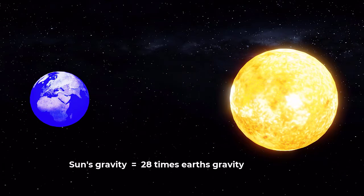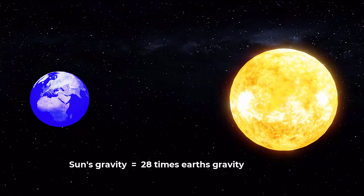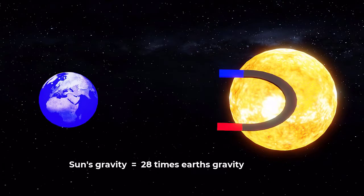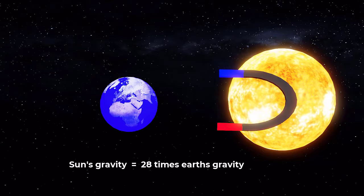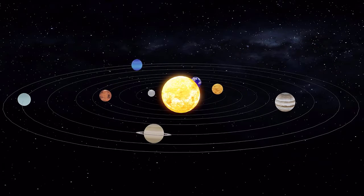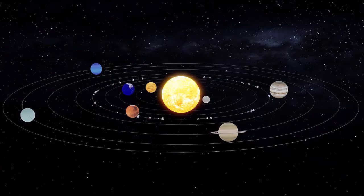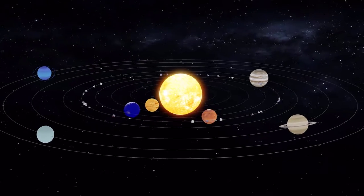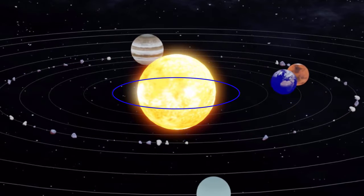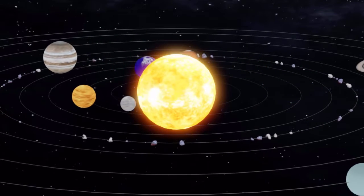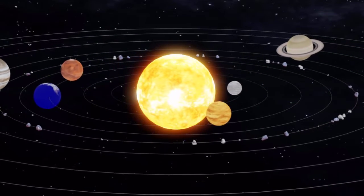Due to the enormous size of the Sun, its gravity is incredibly high. It's about 28 times stronger than Earth's gravity at its surface. This force keeps all the planets, asteroids, and comets in our solar system orbiting around the Sun. The closer an object is to the Sun, the stronger the gravitational pull and the faster its orbital speed.